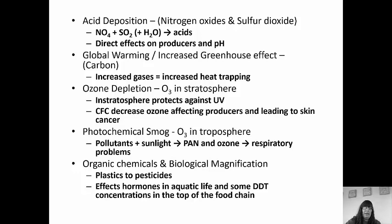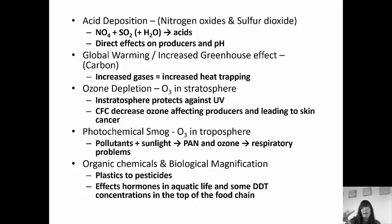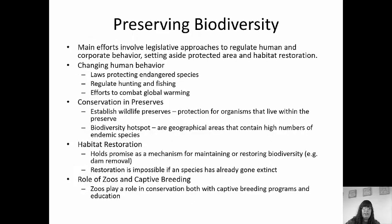Organic chemicals and biological magnification is a problem — plastics and pesticides. Biological magnification occurs when something is released into the water. In the smallest organisms like phytoplankton it's in minute concentrations, but as you go up the food chain it keeps getting more and more concentrated, so that by the top of the food chain it causes big problems. DDT was released into the water, and by the time it reached gulls, it was so concentrated that their eggshells were super thin and cracked readily, almost driving the species extinct.